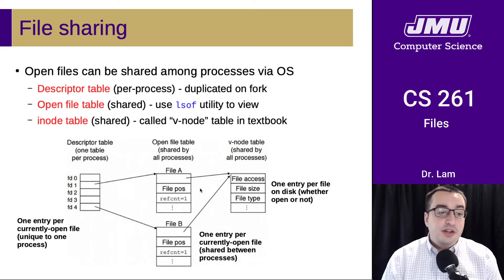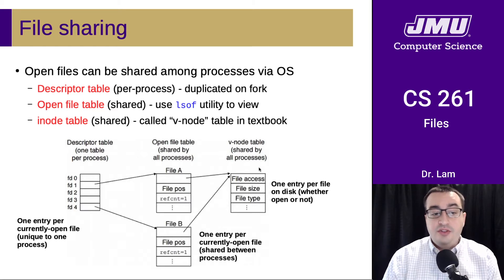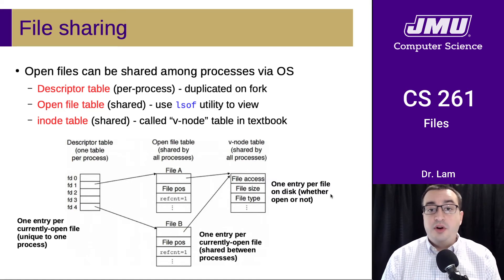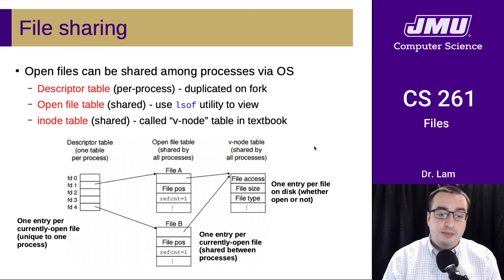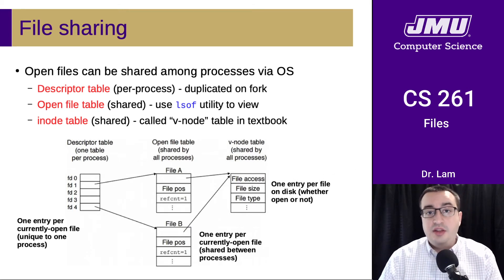The final data structure is the inode table — our textbook calls it the V-node table, but if you go searching online you may find they're more commonly called inode tables. This is also shared by all processes and it has one entry per file on disk, whether it is open or not. This contains all that metadata we talked about: information like the file size, the file type, and where the data is actually being stored on disk.